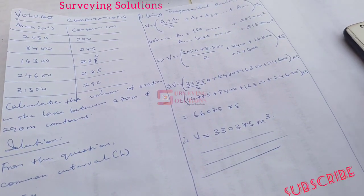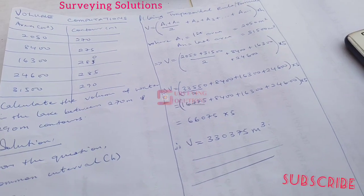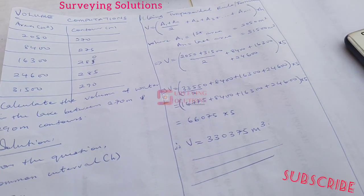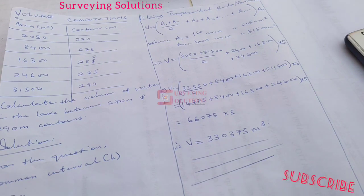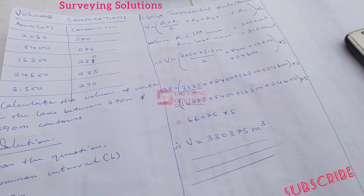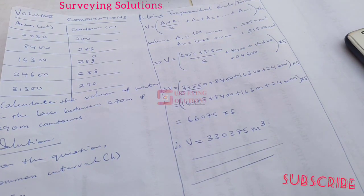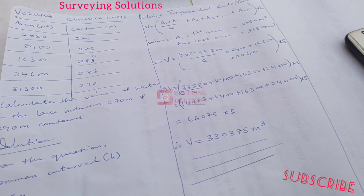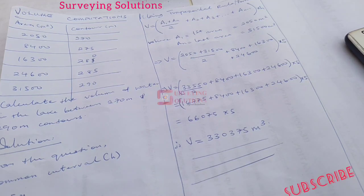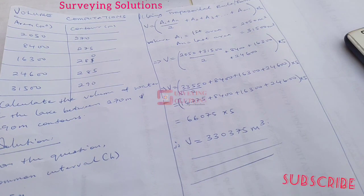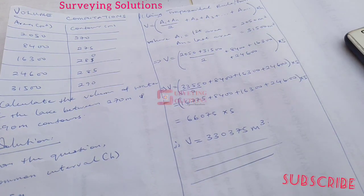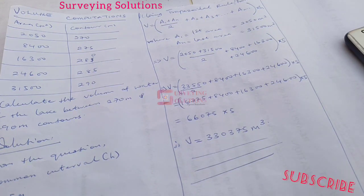Now using the trapezoidal formula, which goes with V equal to A1 plus AN divided by 2. We said A1 is actually the first area. And in this particular question, our first area is 2050 square meters. And then AN is the last area. And in our question is actually 31,500 square meters.